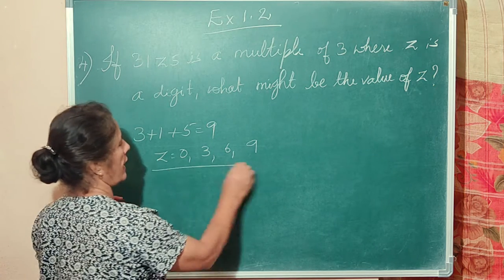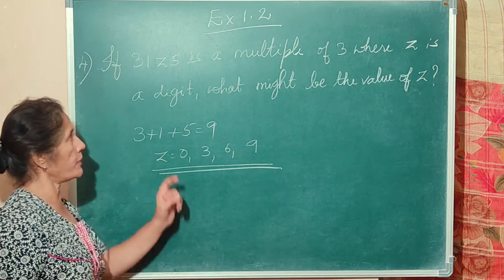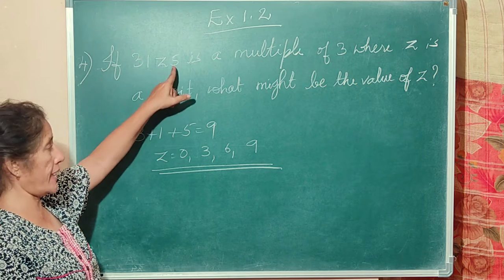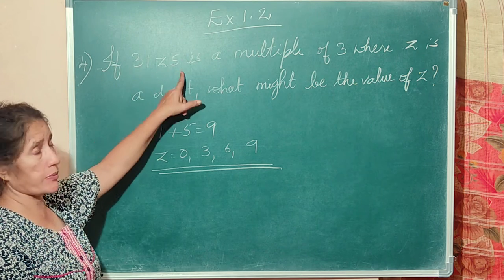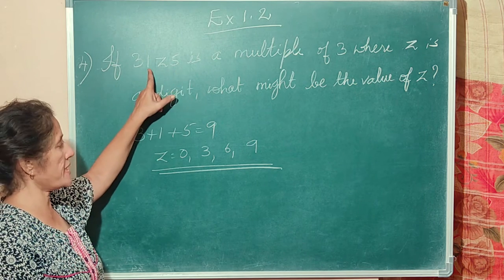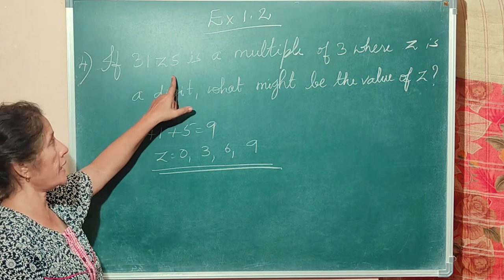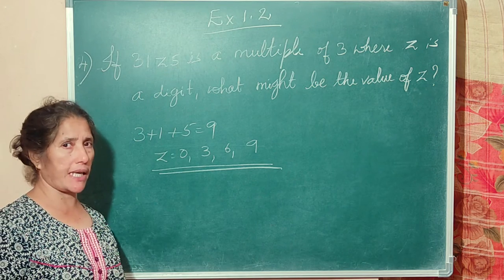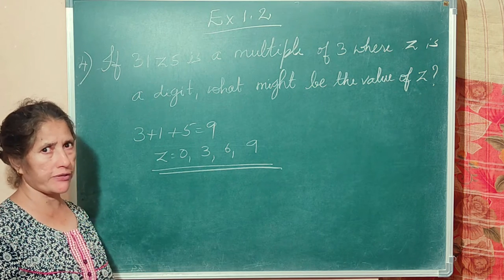These are the values z can occupy. If you put 0, the sum remains 9. If you put 3, it becomes 12. If you put 6, it becomes 15. If you put 9, it becomes 18. All are multiples of 3.